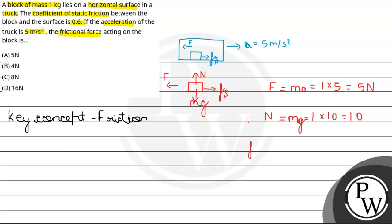Now from here we calculate the value of Fs, the friction force value. So, this will be μs into N. So, μs is given as 0.6. And N we calculated as 10. So this comes out to be 6 Newton.